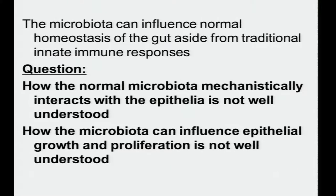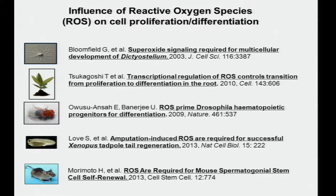So it's well known that the microbiota can influence normal homeostasis in the gut, aside from traditional innate immune responses. I'm not going to touch on the classic TLR or NOD protein today. I'm trying to talk about a novel, extremely highly conserved pathway which may work in parallel to those systems. But the key question of how the normal microbiota mechanistically interacts with the epithelia—and more specifically, how the microbiota can influence epithelial growth and proliferation—is not well understood.